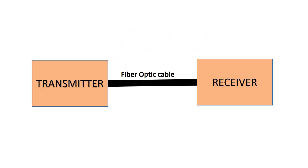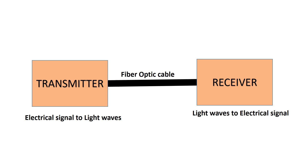Fiber optics cables are made up of three components: transmitter, receiver, and fiber optic cable. A transmitter transforms electrical signals into light waves. The fiber optic cable is used as a medium for carrying light waves. A receiver receives the light signals and converts them into electrical signals.